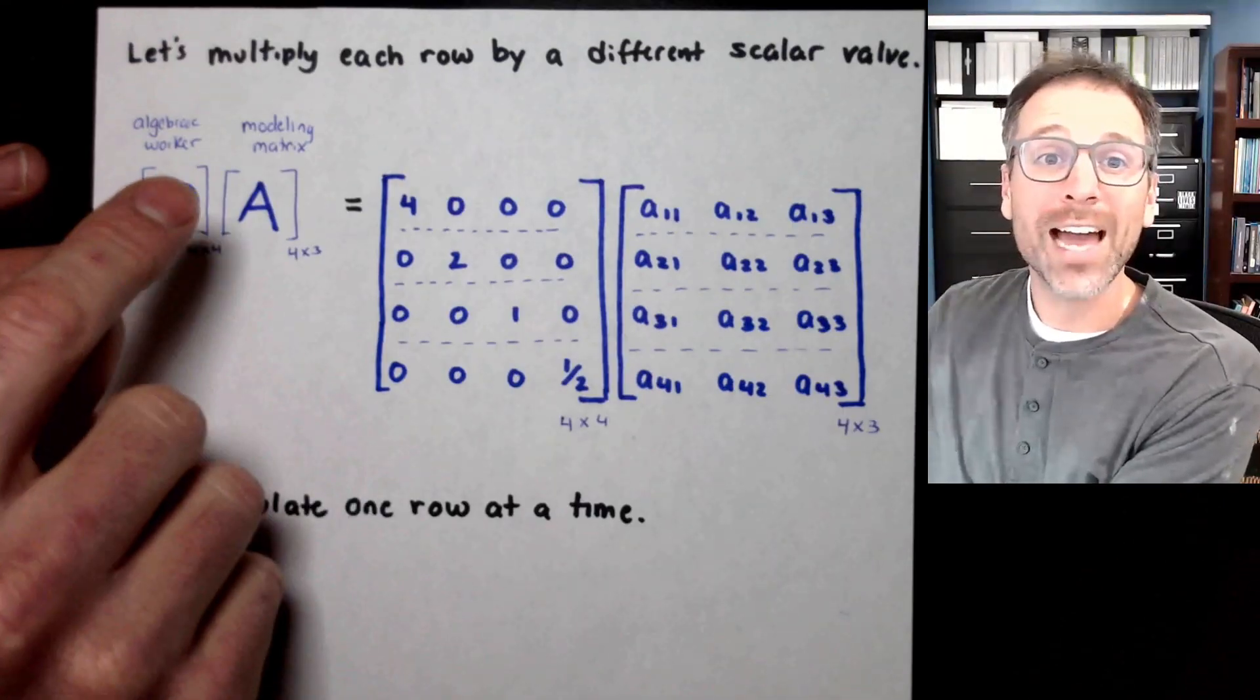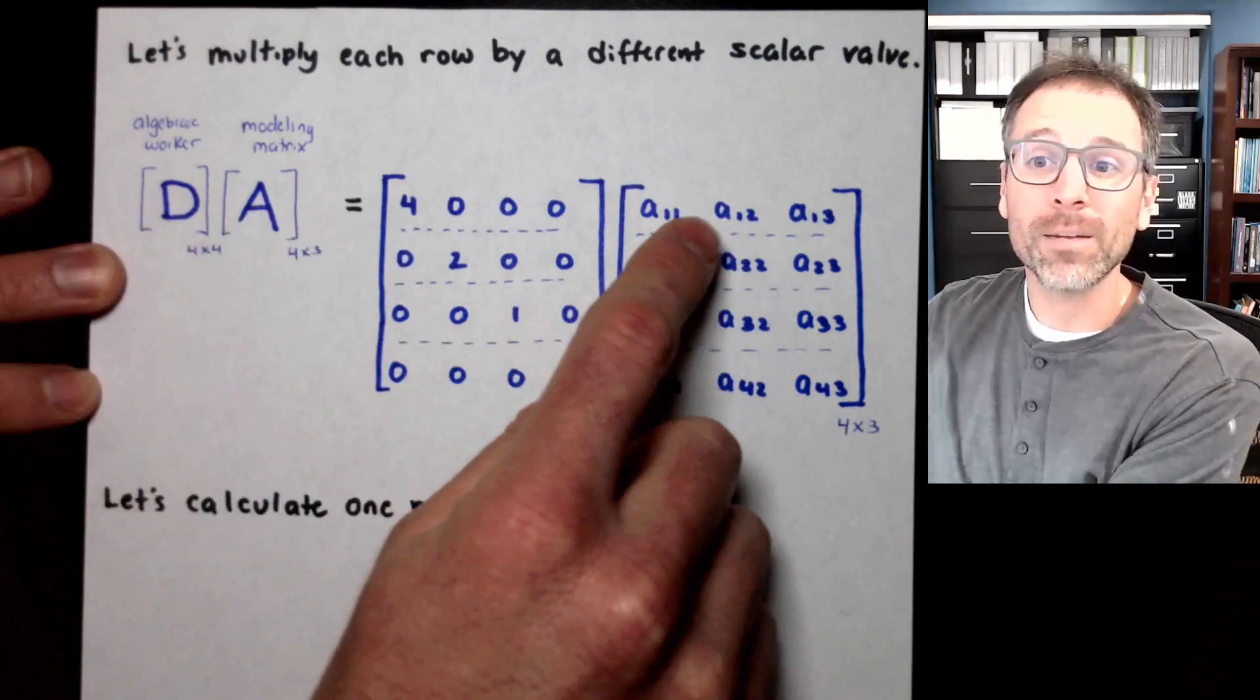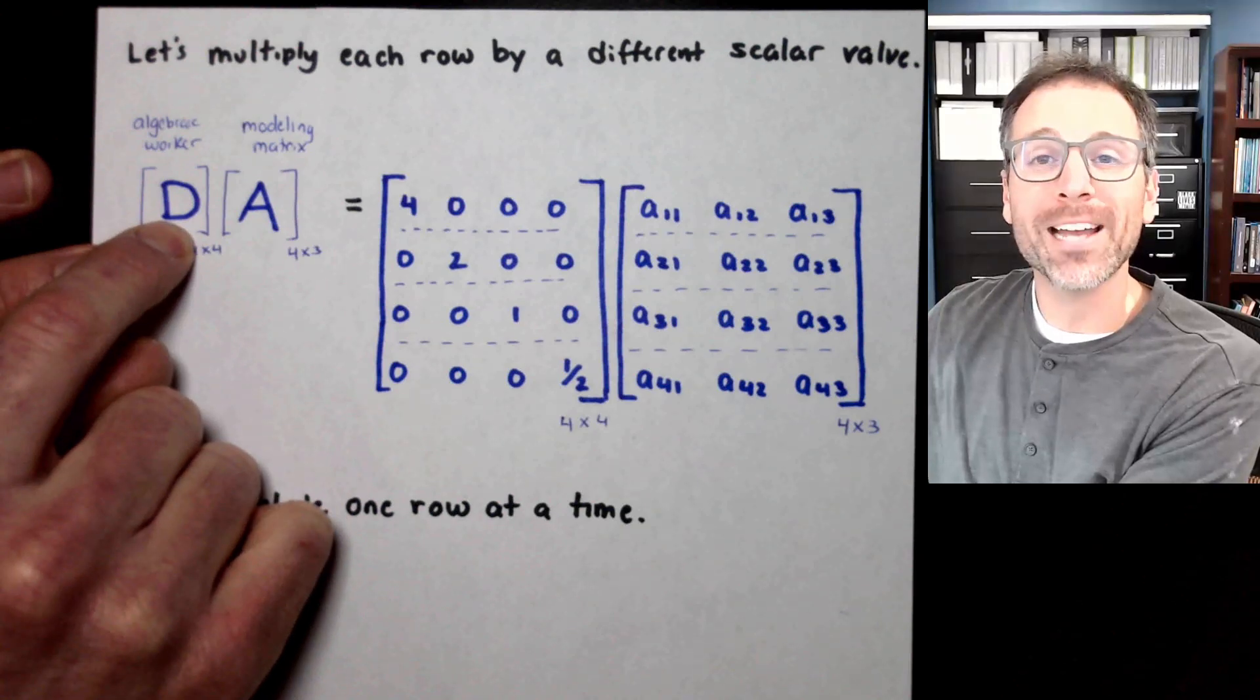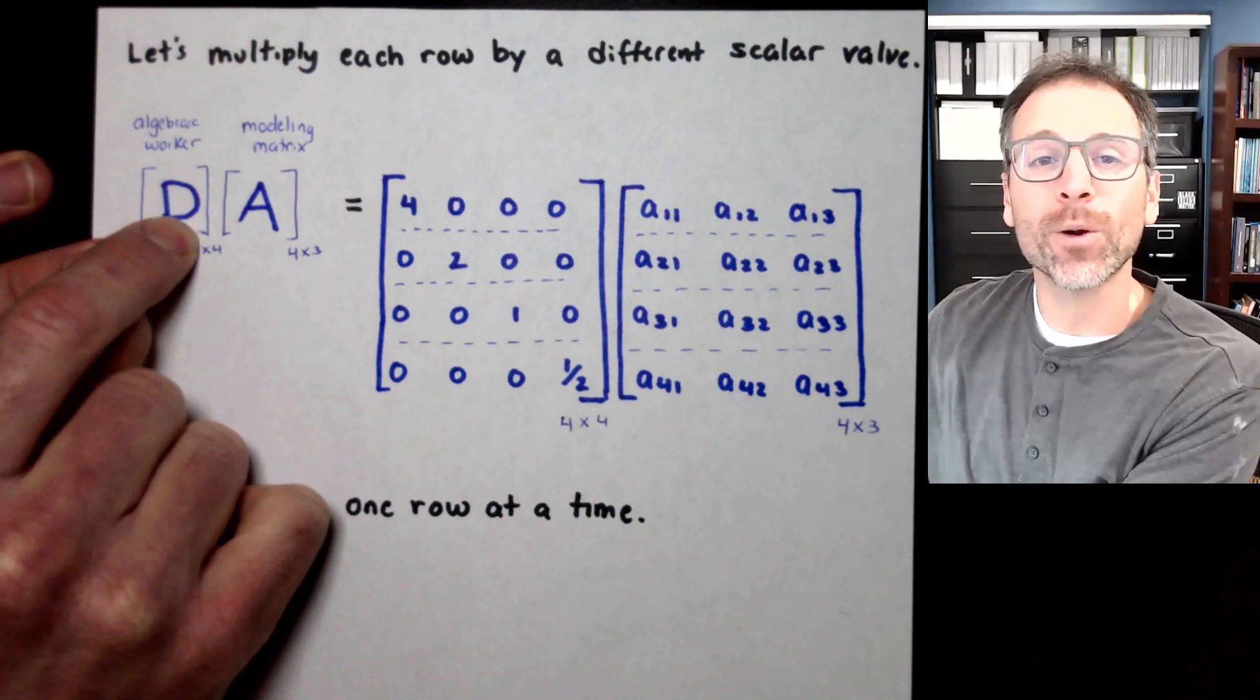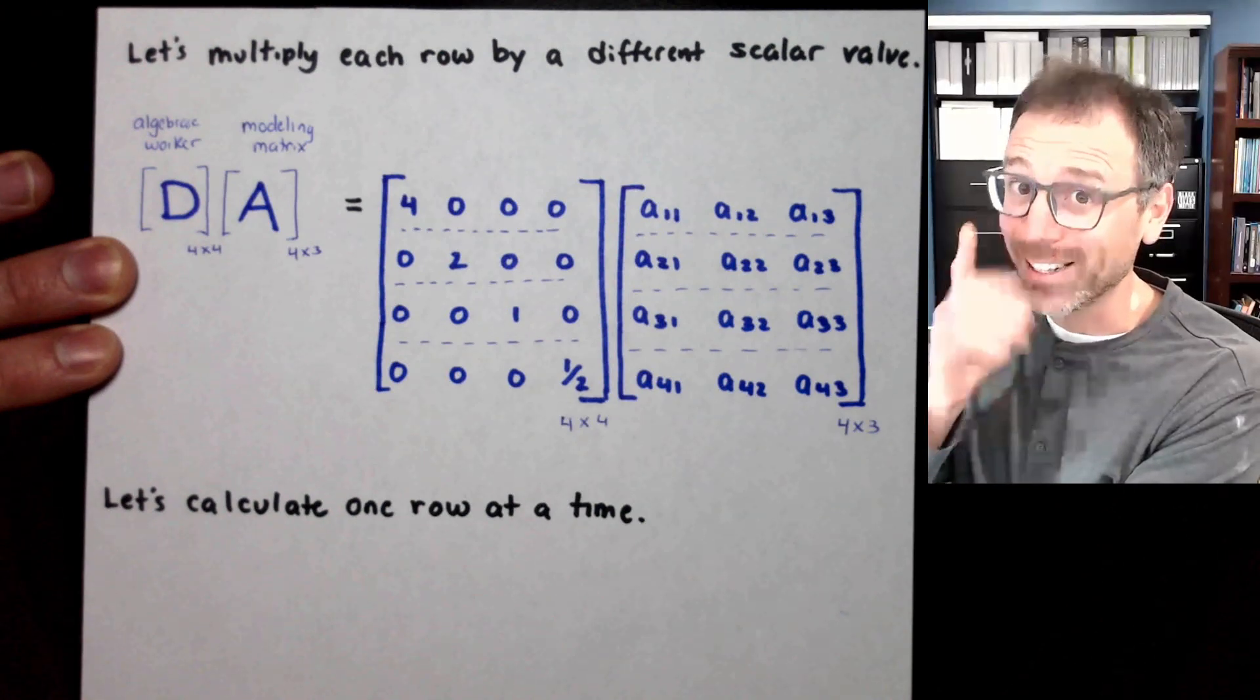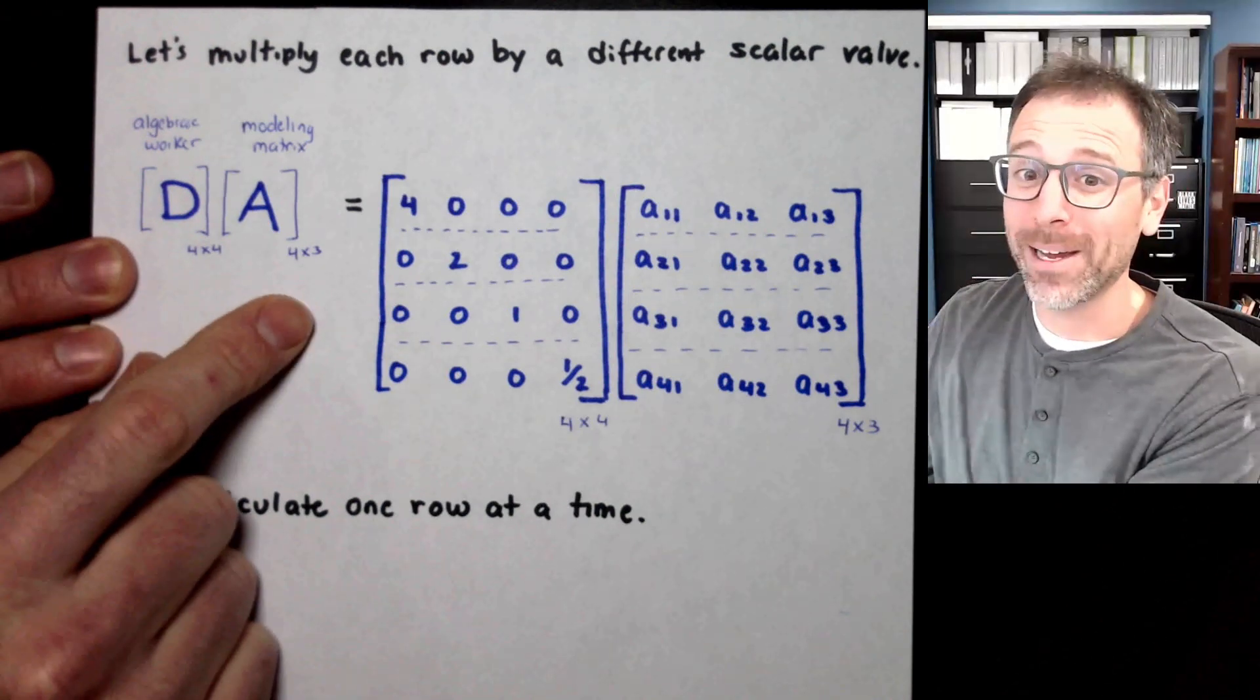Let's go ahead and do that now. So here we have our modeling matrix A, which is a general 4 by 4 matrix. We're going to scale each row by a different number. Let's call that algebraic worker D for diagonal, also for dilation. You see what I'm doing there with my notation?